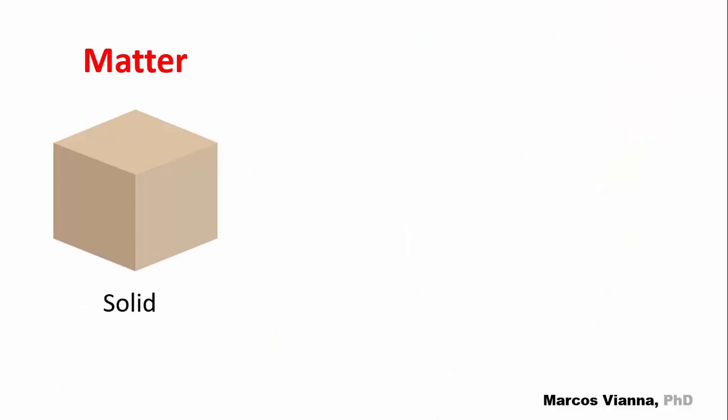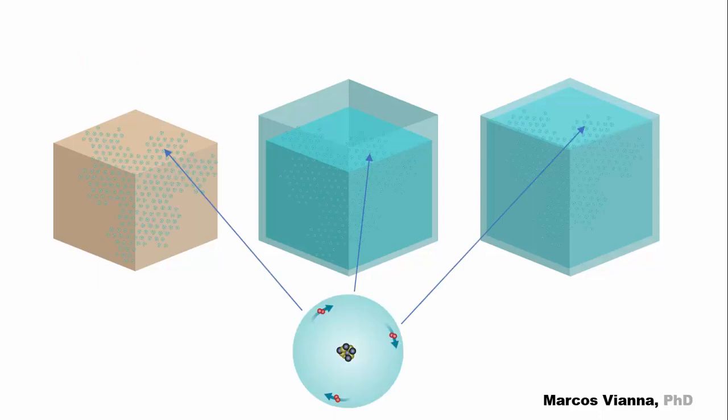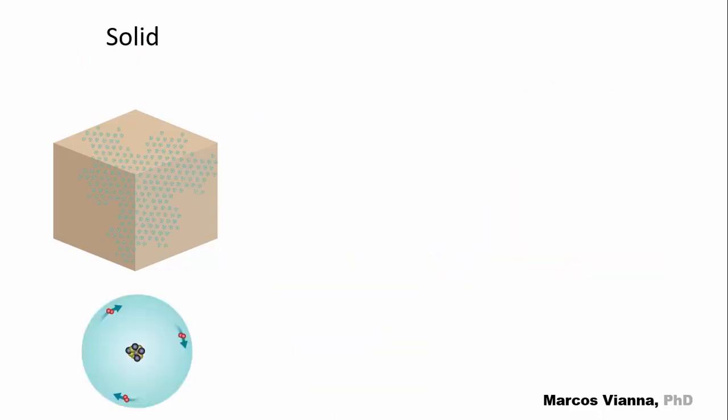Let's forget the plasma for now. Doing this, matter can be solid, liquid, or vapor or gas. No matter its state, it's made of atoms. Here's some matter in the solid state. Its atoms can oscillate around fixed positions, but they are strongly linked to one another, so the solid keeps its shape.